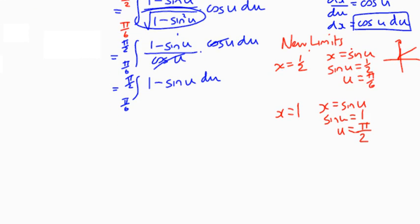I can do that. We're integrating with respect to u. So 1 becomes u, and negative sin u integrated with respect to u becomes... sin u integrates to negative cos u, so we'll have plus cos u, evaluated from π over 6 to π over 2.